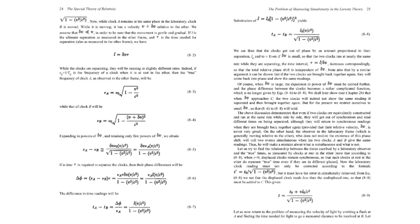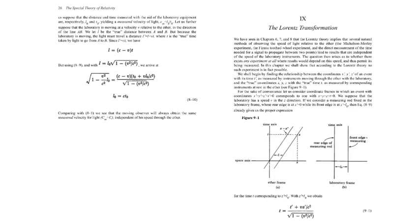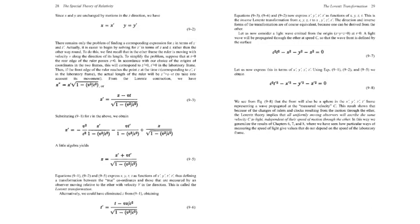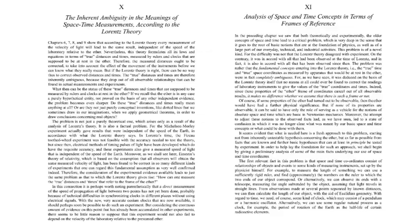Einstein had a totally different approach. He basically said let's just get rid of the ether altogether. He proposed the principle of relativity, which is basically the laws of physics should be the same for all observers as long as they're moving at a constant velocity. It doesn't matter how fast you're moving, the laws of physics work the same way.